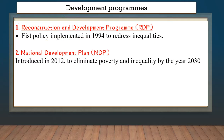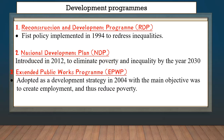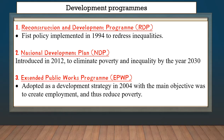The next one was the National Development Plan, introduced in 2012. This one was introduced to eliminate poverty and inequality by the year 2030, so it will end by 2030 — that is the National Development Plan.